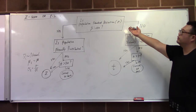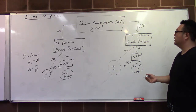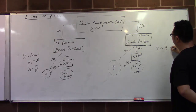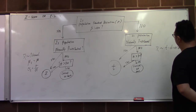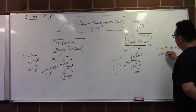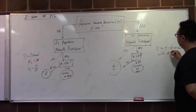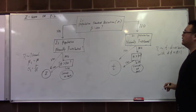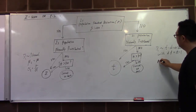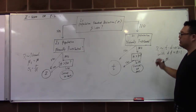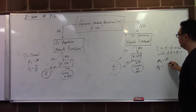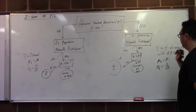On the other side, when we do not know the standard deviation of the population, we use the t-score. The sample mean follows the t-distribution, with degrees of freedom equal to n minus 1. The population mean remains the same, but the standard deviation is estimated by the sample standard deviation divided by the square root of n.